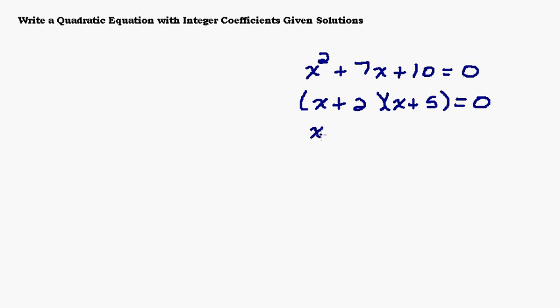So now we're going to set each factor equal to zero using the zero product property. If two things multiply together to be zero then certainly either the first factor has to be zero or the second factor has to be zero. Well if the first factor is zero that would mean that the x value is negative 2. If the second factor is zero that would mean that the x value is negative 5. Okay so there's the solutions.